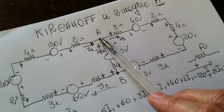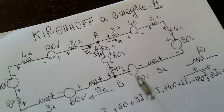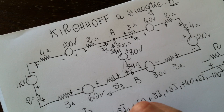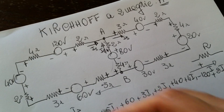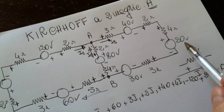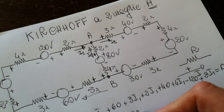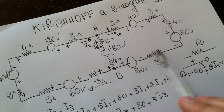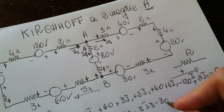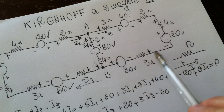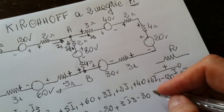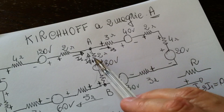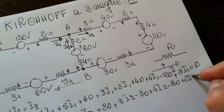Then we have the second branch. We start from A and go clockwise. We have plus 3·I3, plus 40, plus 2·I3, plus 4·I3, then plus 20, then plus 3·I3, minus 30, then plus 40, minus 30. This is because we find the first sign which is minus, then minus 30. Then plus 4·I2, then plus 40·I2. Then we have minus 80, and then plus 20·I2, equals zero.